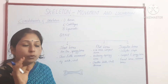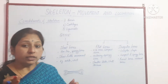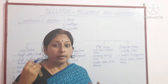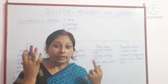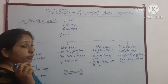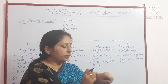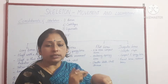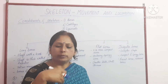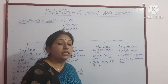Short bones are box-like structures with spongy bone inside. The cranium is an example of a box-like structure. Short bones show very little movement. They are present in the ankle and wrist regions.